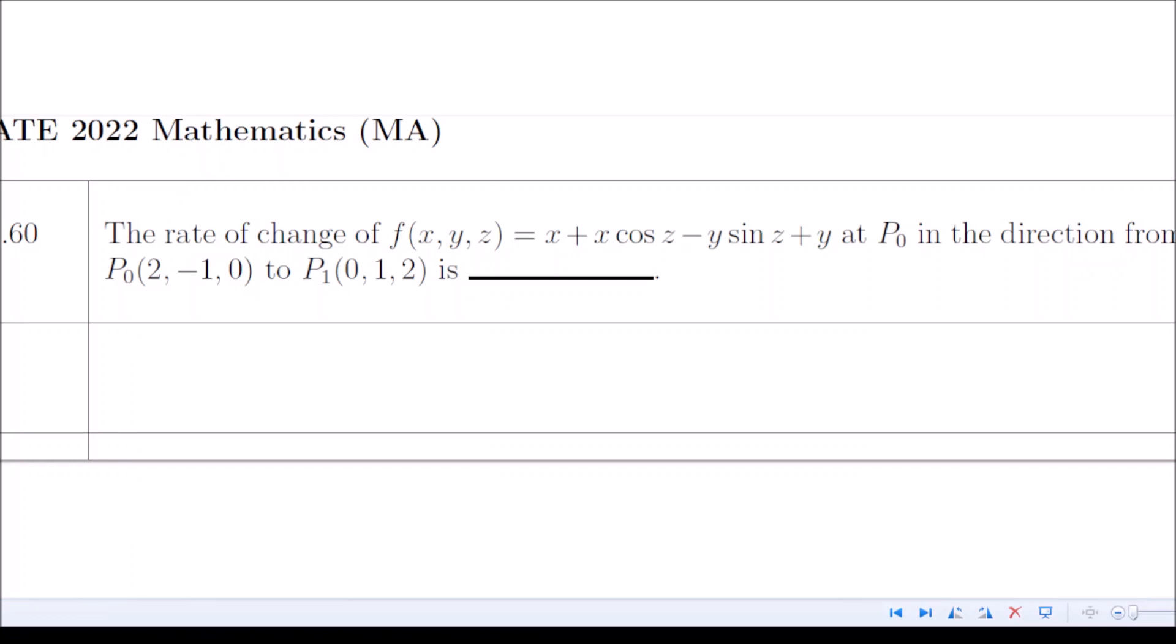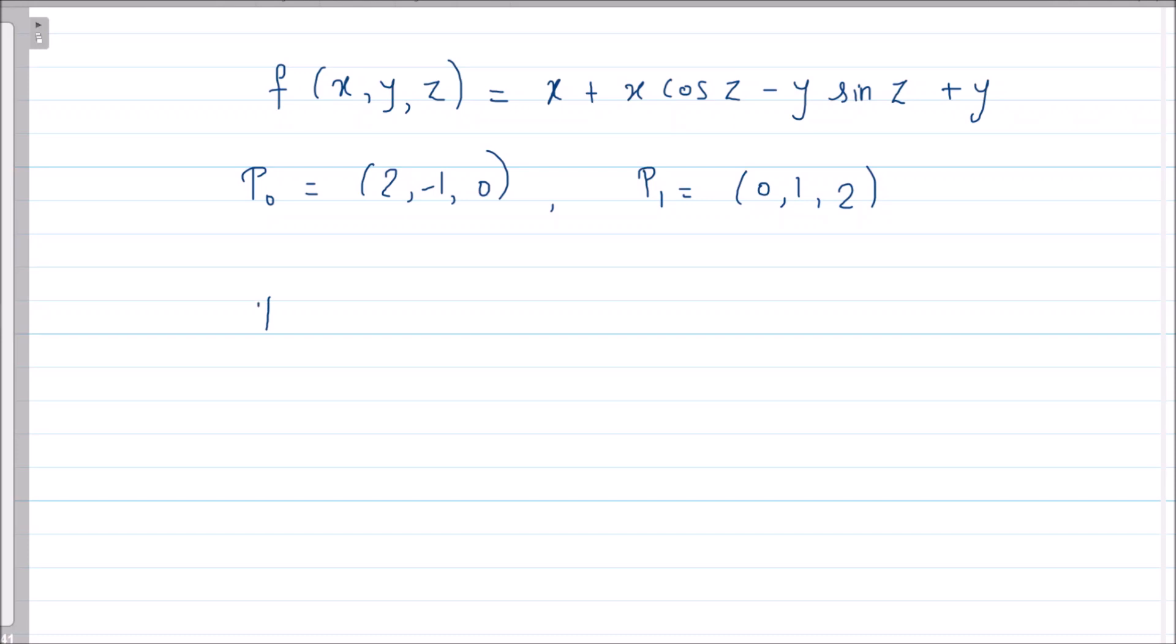And whenever the given function is differentiable, directional derivative can always be written in terms of dot product. The theorem says that the directional derivative of f in the direction u at the point P₀ is given by grad f at the point P₀ dot product with the direction vector u. This is the theorem that we can use whenever the function is a differentiable function.